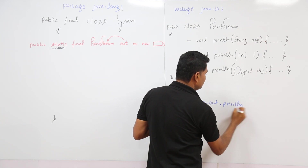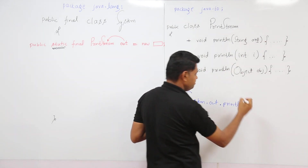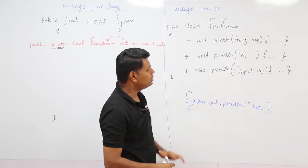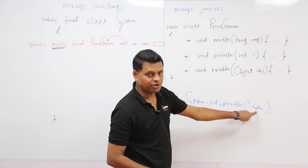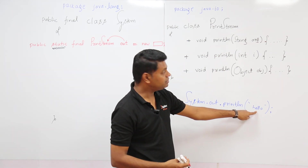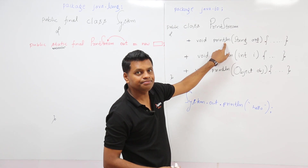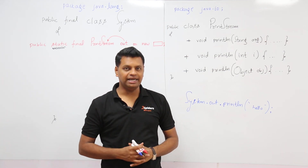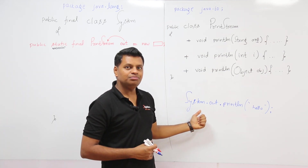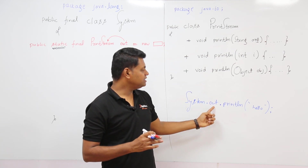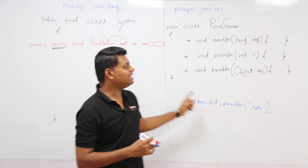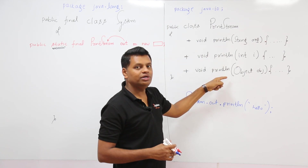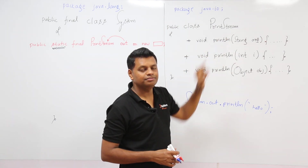So System.out.println('Hello') — since we pass a String argument, it executes the overloaded println method that takes a String. The conclusion is: System is an inbuilt class present in the java.lang package; out is an object of PrintStream, which is a static variable in the System class; and println is one of the overloaded methods of the PrintStream class. That's the full explanation of System.out.println.